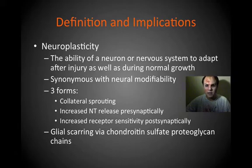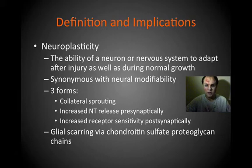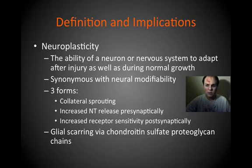This adaptation or modification occurs in three different ways. The first is collateral sprouting — intact axons after an injury can sprout or grow new axon terminals to increase the strength of signal propagation down to the destination. Second, neuroplasticity is achieved through increased neurotransmitter release presynaptically as well as increased receptor sensitivity postsynaptically. These are done in hopes of increasing the efficiency with which the nervous system works.